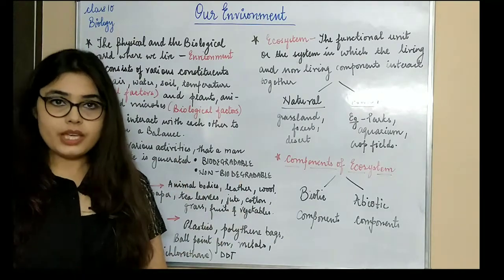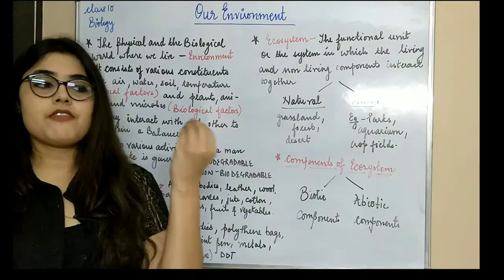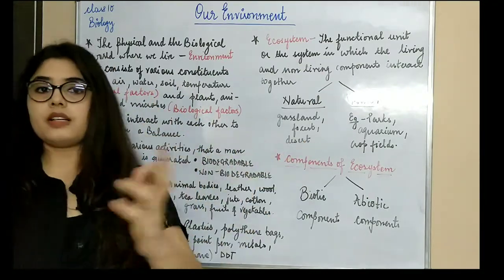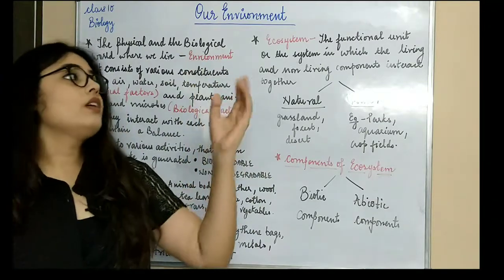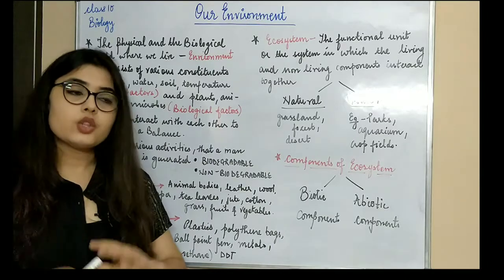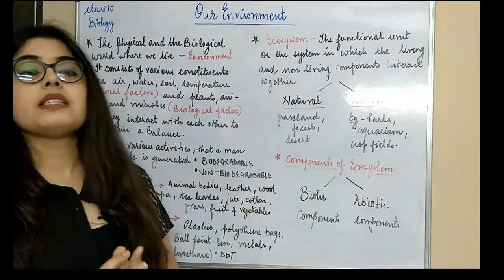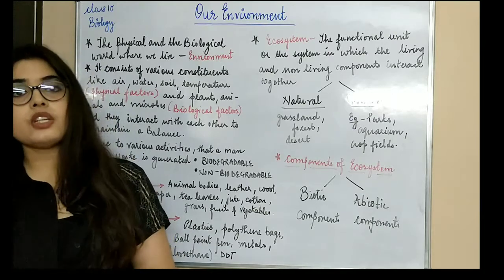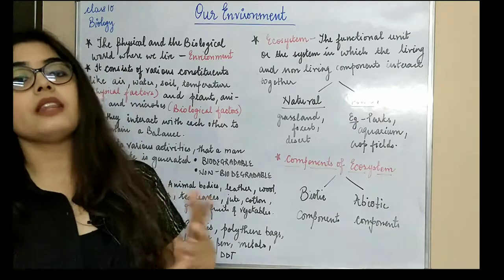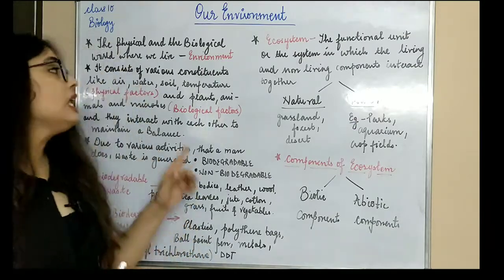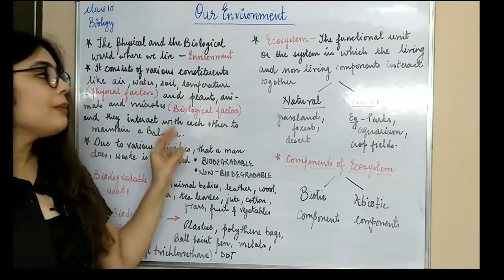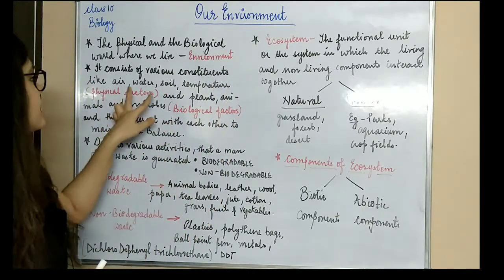For example, this is my room. In this room, my mom and father are sitting here — they come in the biological component. Other factors like electricity, fan, wall, clock, ceiling, floor — all these are the physical attributes. So environment basically means when the physical and the biological factors both come together in the area where we live.